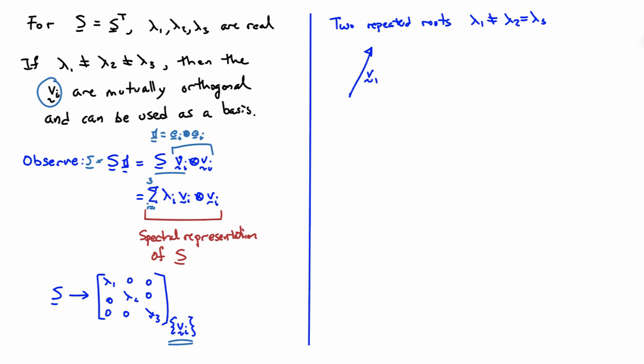So we'll have one eigenvector associated with lambda 1. And associated with lambda 2 and lambda 3 actually will be a plane of eigenvectors. Any vector that's orthogonal to v1 will qualify as an eigenvector. And usually what we do is we just pick two of those that are orthogonal to each other. But we don't have to.